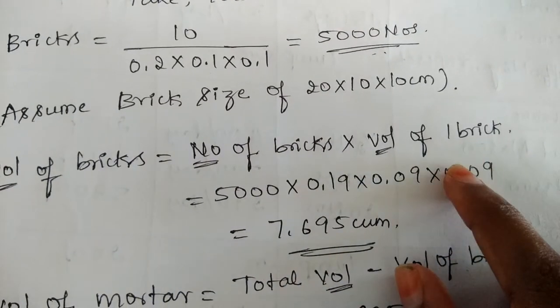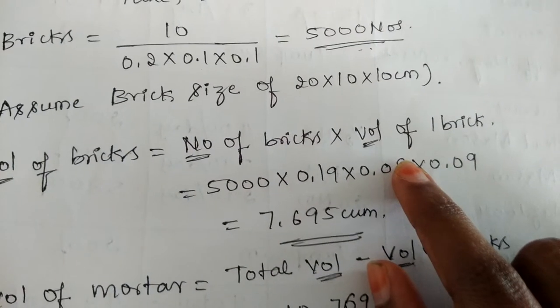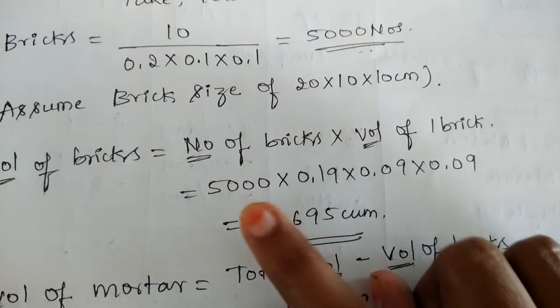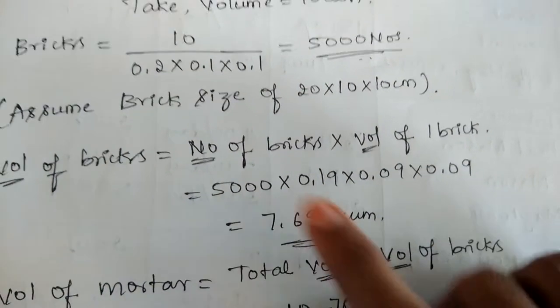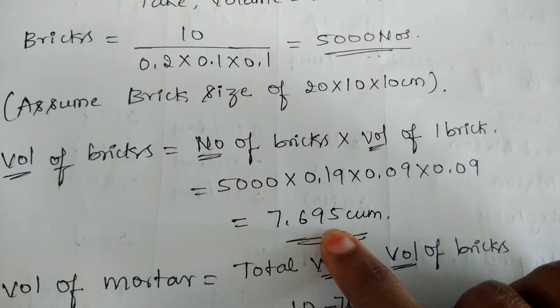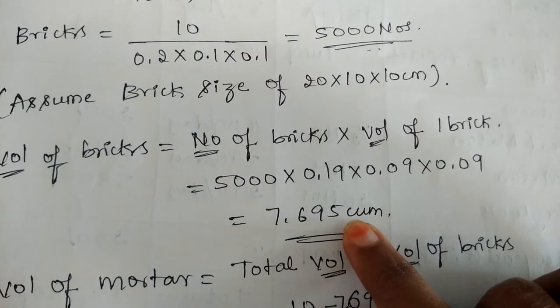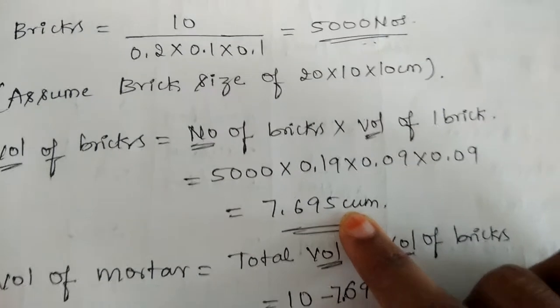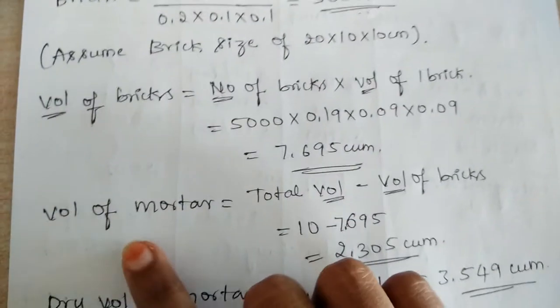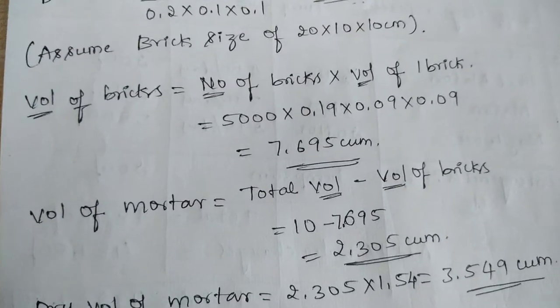This gives you the volume of one brick. On multiplying one brick volume with the number of bricks, we get the total volume of bricks which is 7.695 cubic meter. Now let us find the volume of mortar.